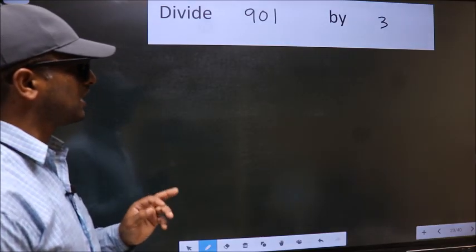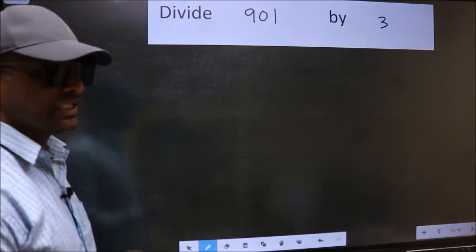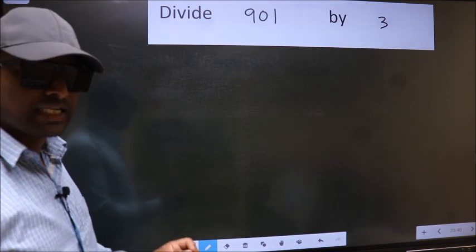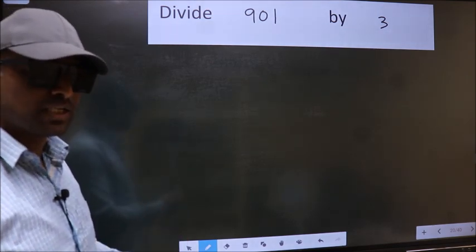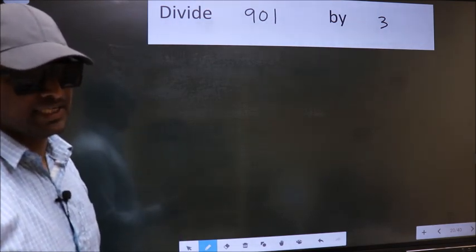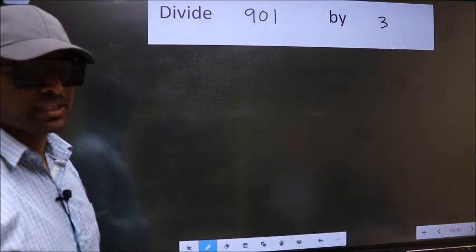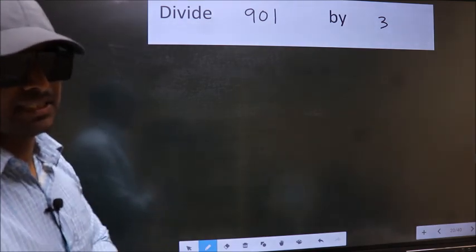Divide 901 by 3. While doing this division, many do this mistake. What is the mistake that they do? I will let you know. But before that, we should frame it in this way.